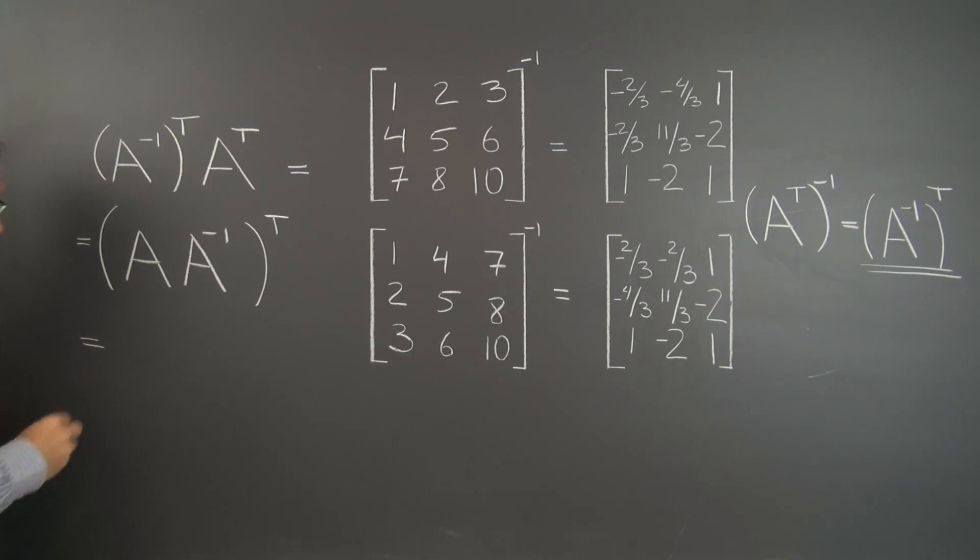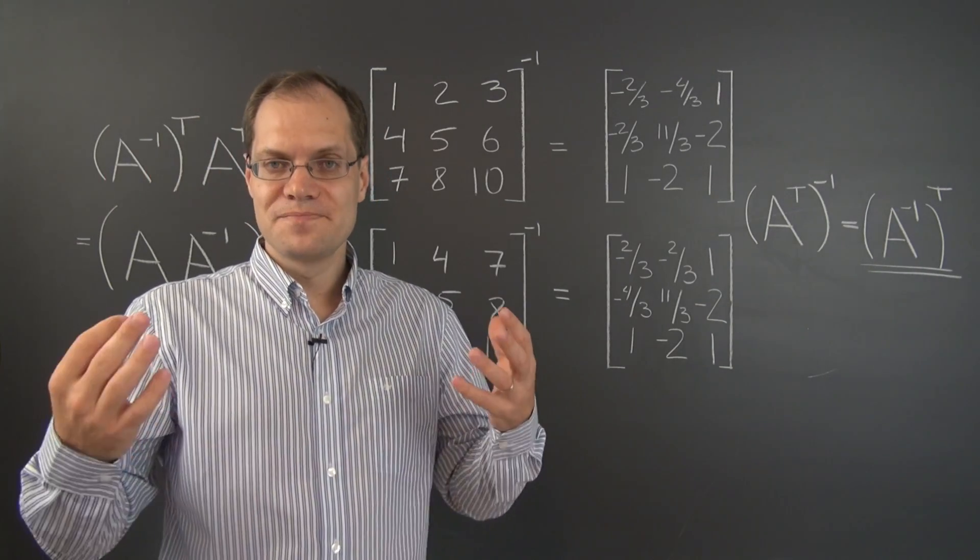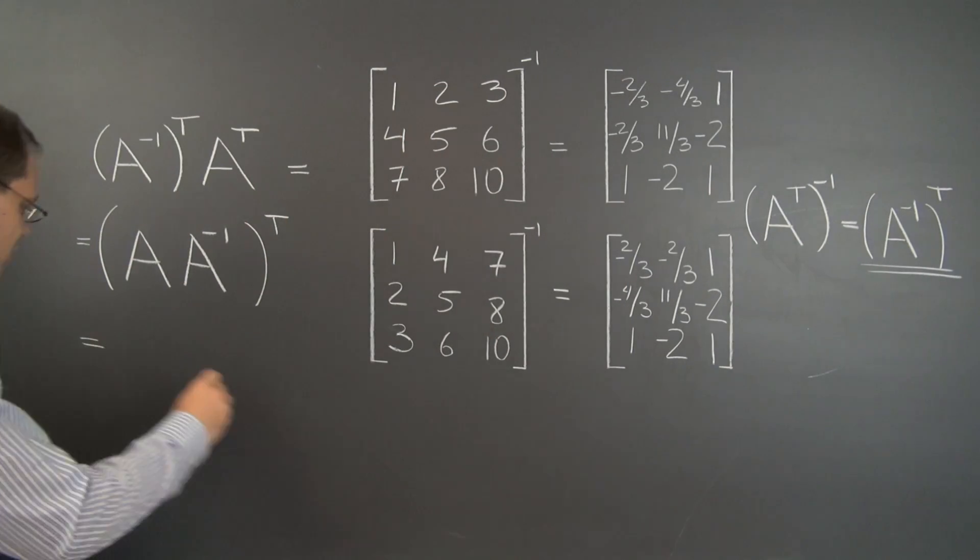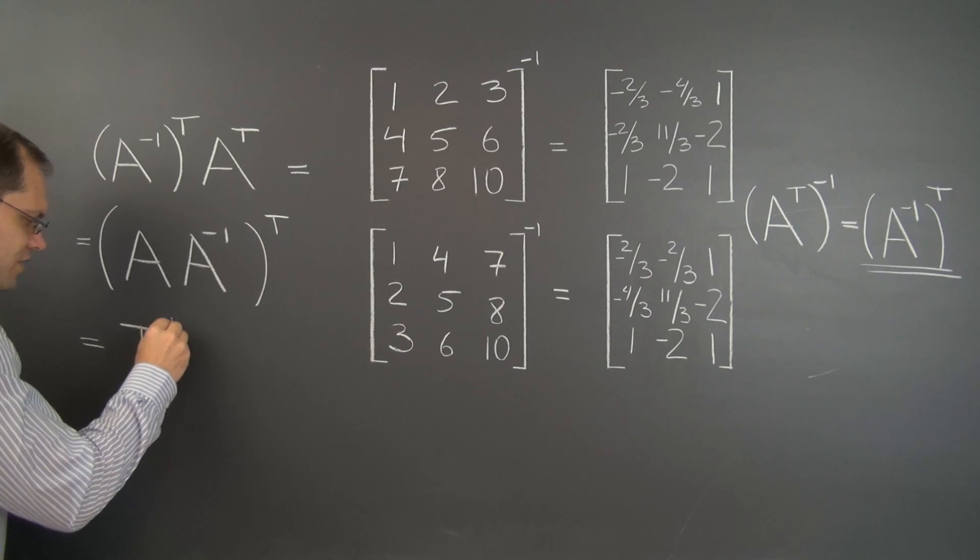And what do we have in parentheses? We have A multiplying A inverse. Of course it's the identity matrix. So the result is the identity matrix transposed.